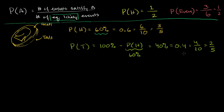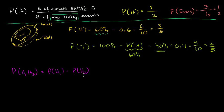So once again, this probability is saying — we can't say equally likely events — but if we do a gazillion of these, we would expect that as we get more and more flips, 40% of those would be tails. Now, with that out of the way, let's actually do some problems. Let's think about the probability of getting heads on the first flip and heads on the second flip. These are independent events — the coin has no memory. Regardless of what happened on the first flip, I have an equal chance of getting heads on the second flip.